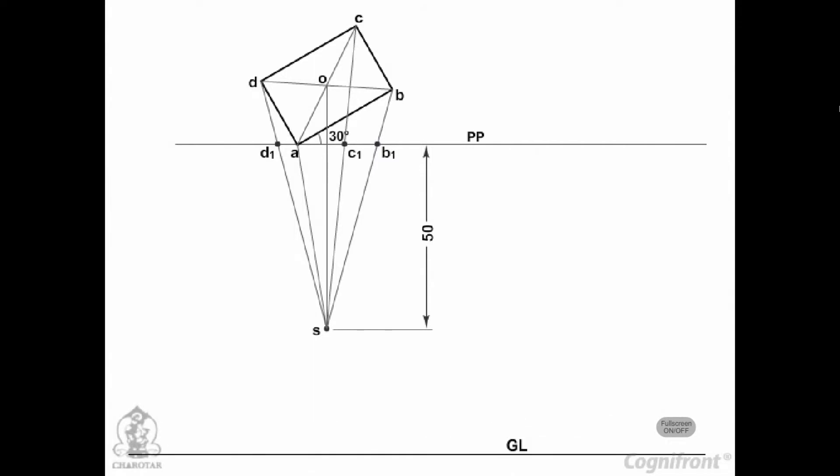Draw the ground line GL at any distance below PP, and the horizon line HL 30mm above GL. Through S, draw lines parallel to AD and AB, cutting PP at points V1 and V2 respectively. Project V1 to V1 and V2 to V2 on HL.